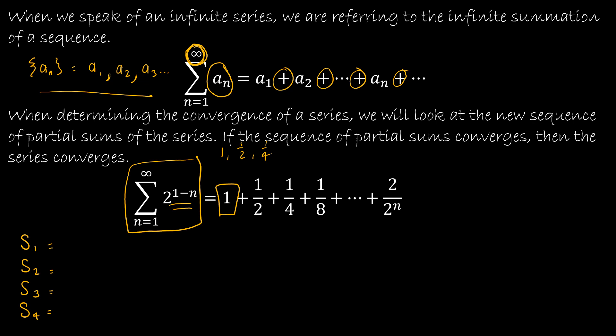Let's find the sum of the first one value of the sequence. The first value is just 1. Let's find S sub 2, the sum of the first 2 values of the sequence: 1 plus 1 half, or 3 halves.